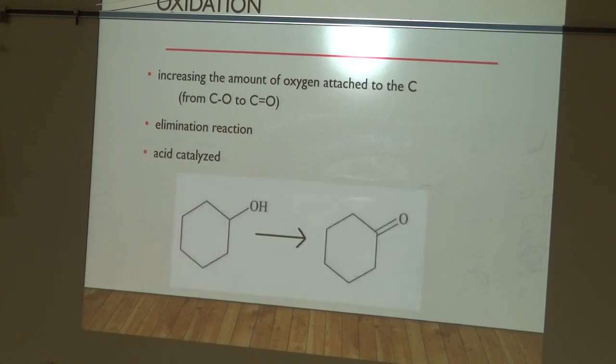So here's the reaction that we're going to do, the mechanism on how the chromium and the sulfuric acid get together to do that is not well understood, but for the final, you should be able to take a secondary alcohol in the presence of dichromate and sulfuric acid and tell me that it's going to make a ketone.